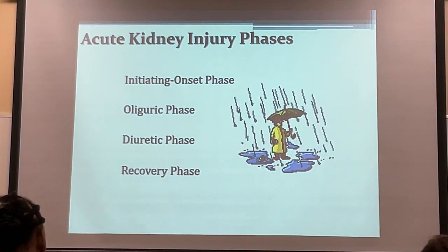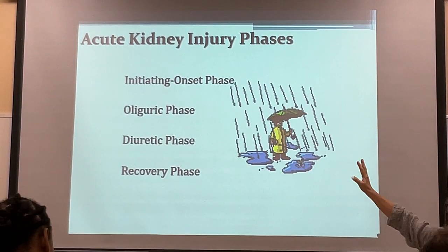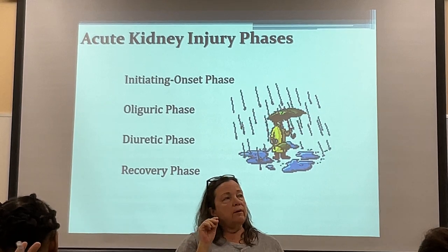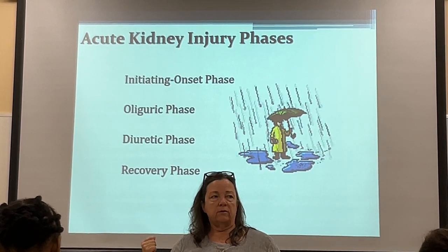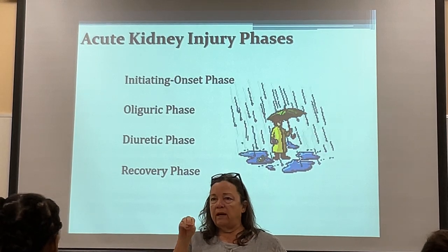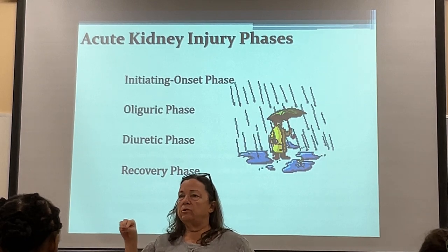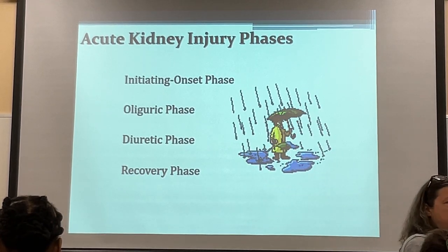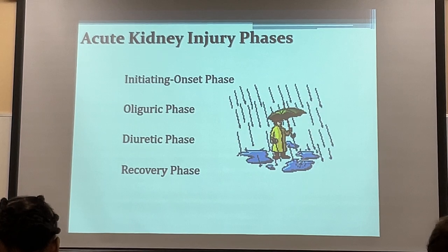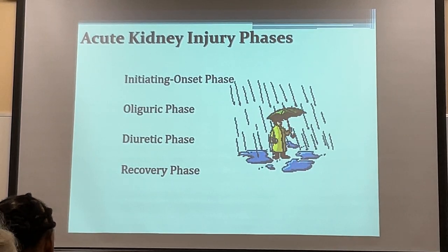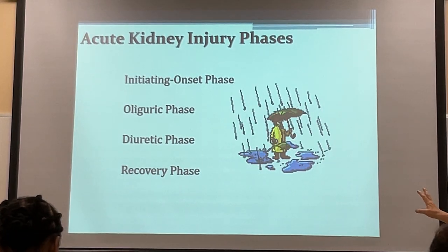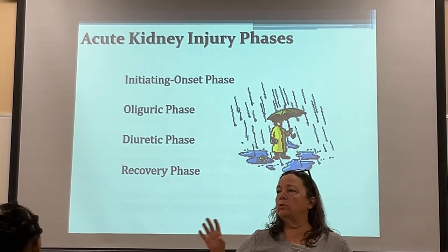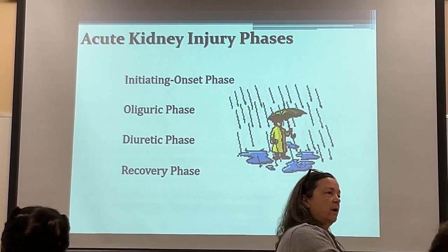The phases of AKI: after the causative insult, kidneys enter the oliguric phase. The oliguric phase lab markers are equivalent to what you see in chronic kidney disease — elevated potassium, BUN, creatinine, and phosphorus; low GFR, sodium, calcium, H&H, and bicarb. After treatment, patients start recovering and lab markers normalize again. That's the key difference between AKI and CKD.